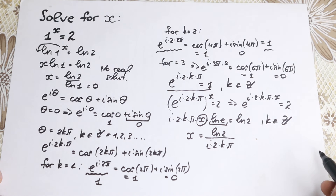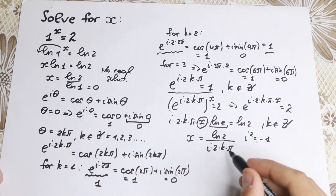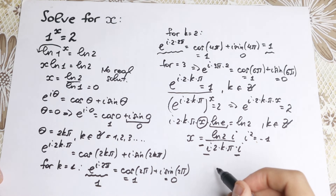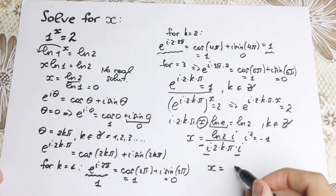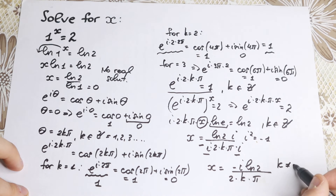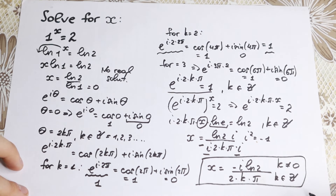We can simplify this further. Since i is in the denominator and i squared equals negative 1, we multiply numerator and denominator by i, so i times i gives minus 1 in the denominator. Our final answer is: x equals negative i times natural log 2, all over 2k pi, where k is a nonzero whole number.